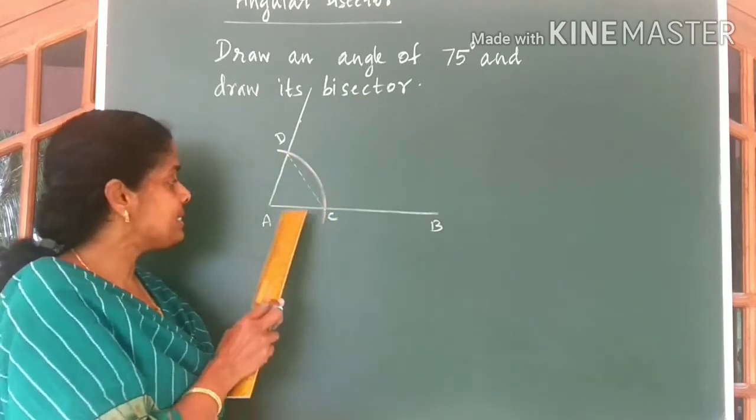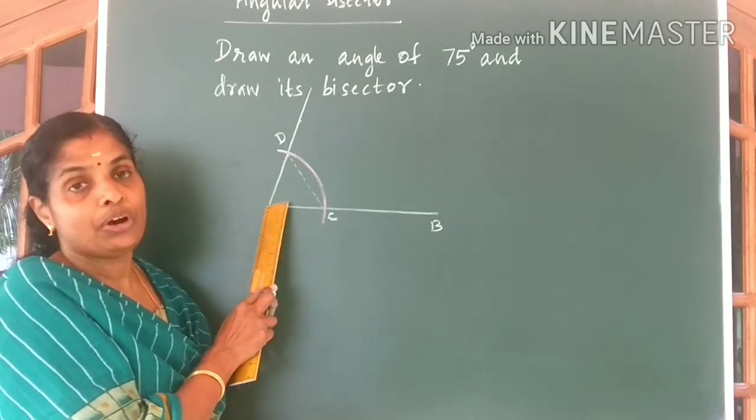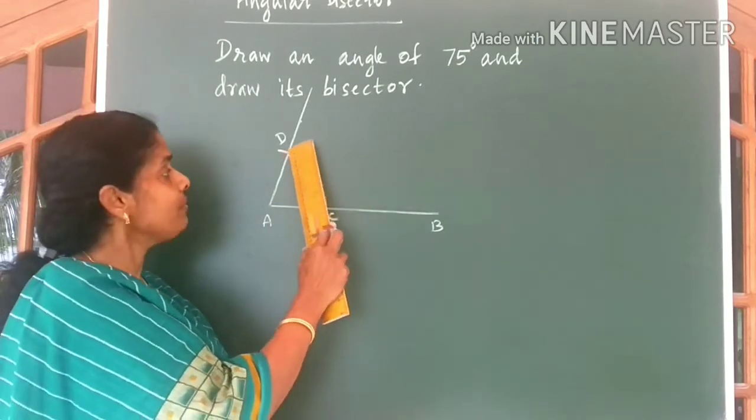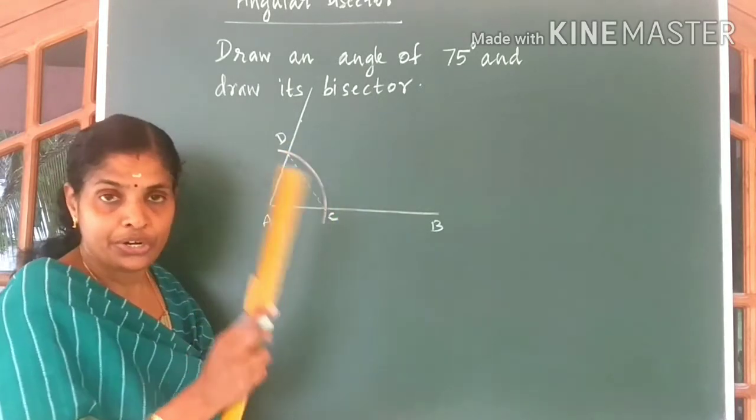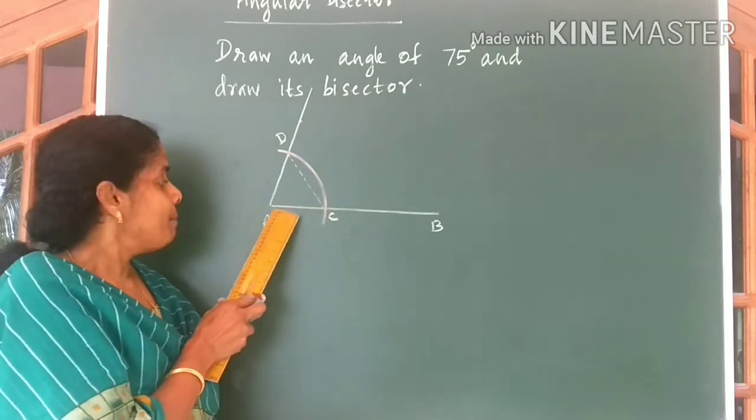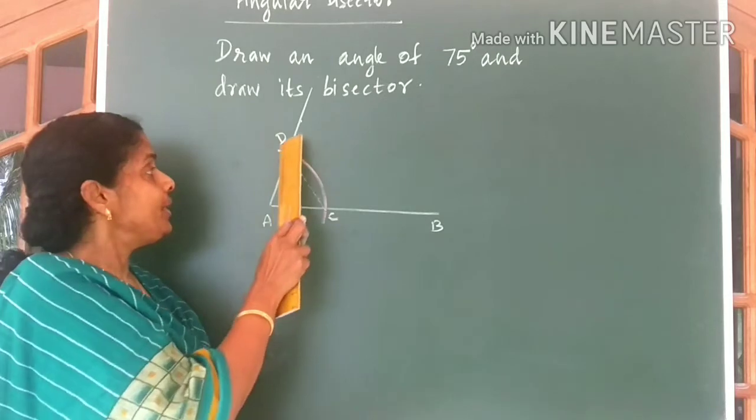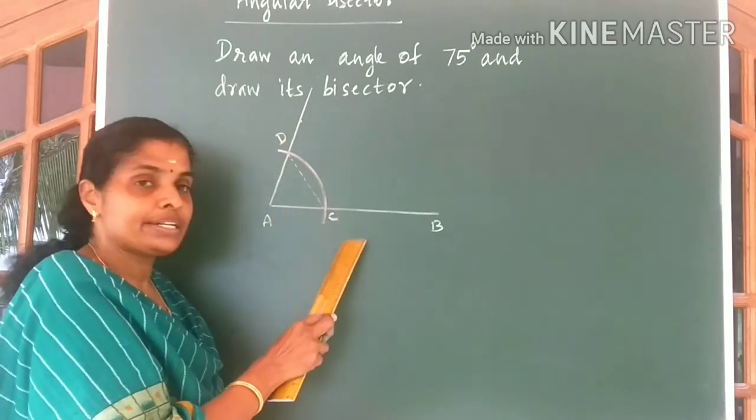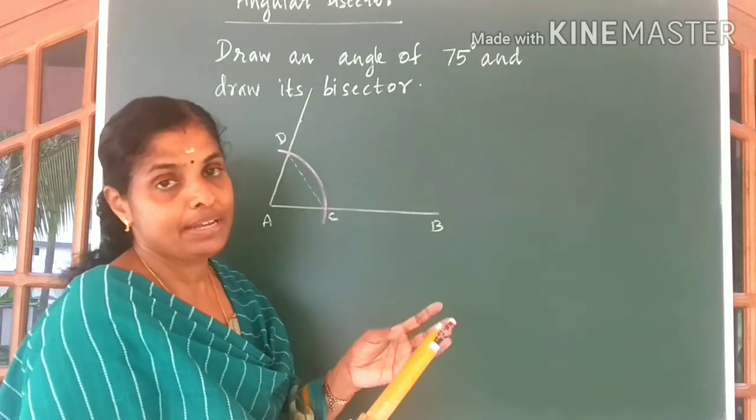Now to draw the bisector of angle A, it is enough if you draw the bisector of this line CD. Is it clear children? To draw the bisector of angle A, draw the bisector of this line CD. Use our previous idea.